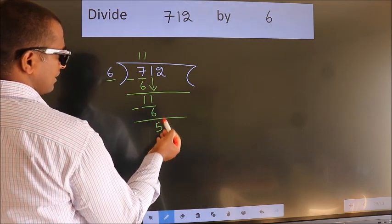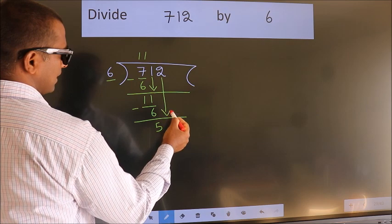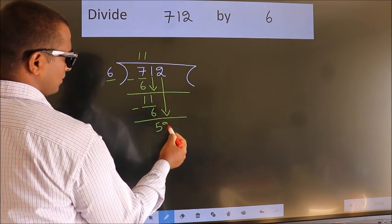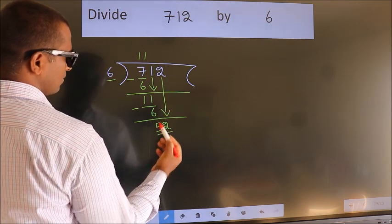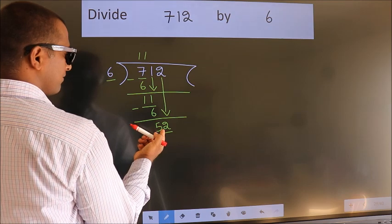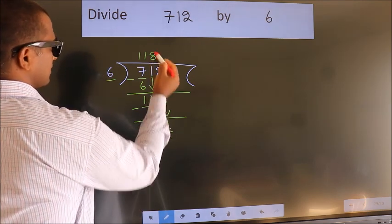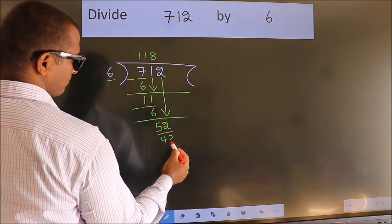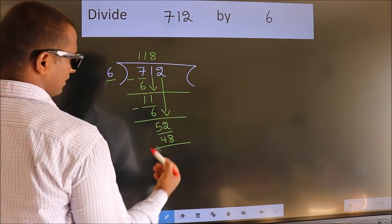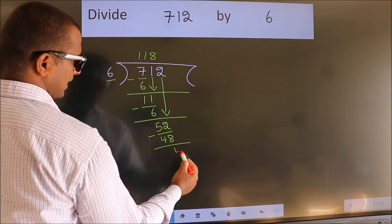After this, bring down the beside number. So 2 down. So 52. A number close to 52 in 6 table is 6 eights, 48. Now we subtract. We get 4.